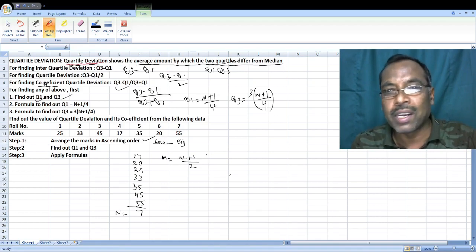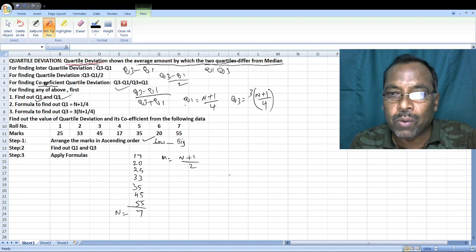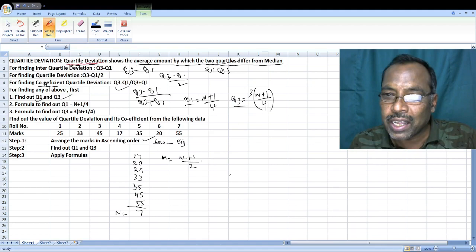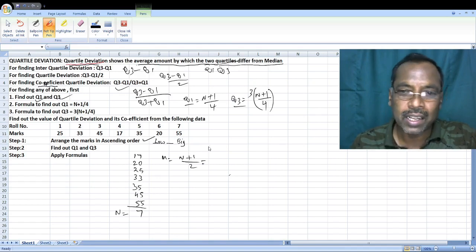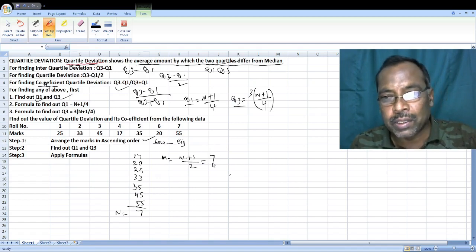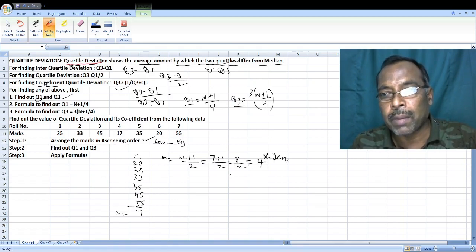n plus 1 by 2, not n plus 1 by 4. n plus 1 by 4 is for Q1. n plus 1 by 4 into 3 is for Q3. n plus 1 by 2 is for median, the center point. So n plus 1 by 2 is 7 plus 1 by 2 equals 8 by 2 equals 4.